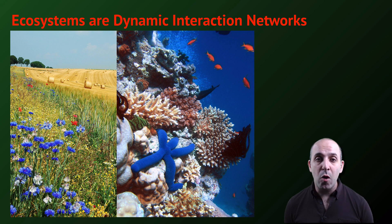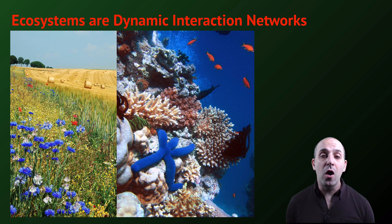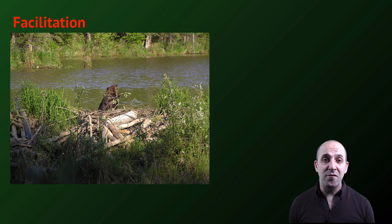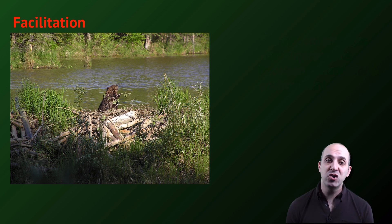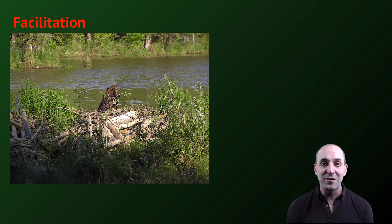Regardless of what the ecosystem is — no matter how big or small, no matter where it occurs — ecosystems, just like any other biological system, are dynamic interaction networks. They are an emergent property that results from the interactions between the community and the environment, and they are dynamic: they change over time. We'll look at two processes that drive those changes, starting with facilitation.